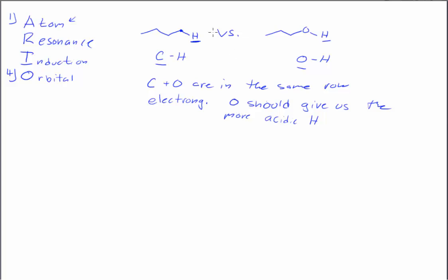Because O is more electronegative, if we lose the hydrogen, we form this O minus, and if we lose the hydrogen over here, we form a C minus. So really what ARIO is helping us decide is which of these conjugate bases is more stable.